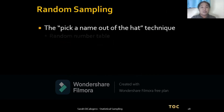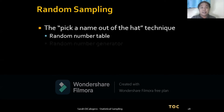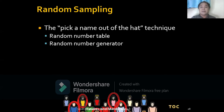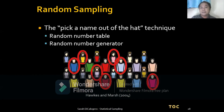How to do random sampling: first, you pick a name from a hat — that's what we call the hat technique. Other methods include the random number table and the random number generator.